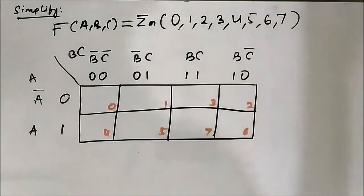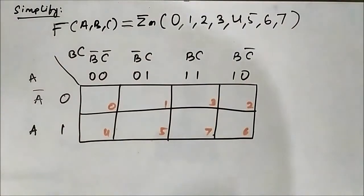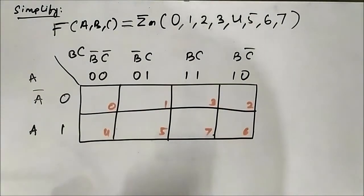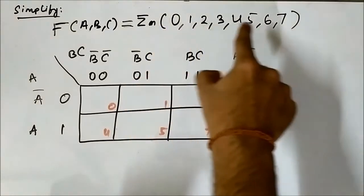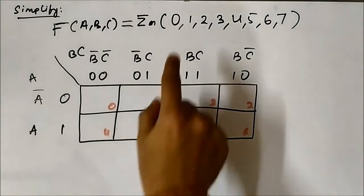This is the seventh question related to SOP 3-variable K-map simplification. We have the Boolean expression given — it is a 3-variable expression given in terms of minterms. There is something interesting about this question because it includes all the cells that are present in a 3-variable K-map.